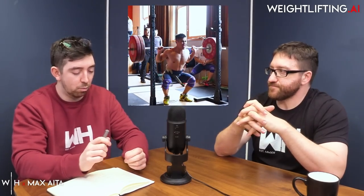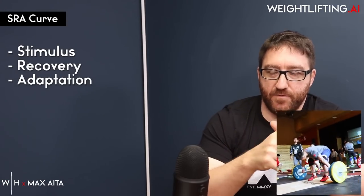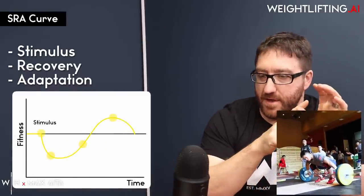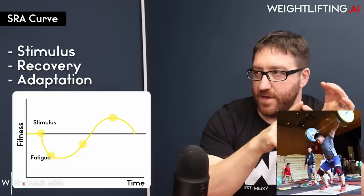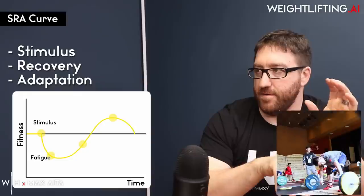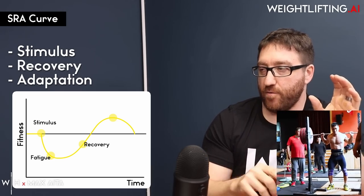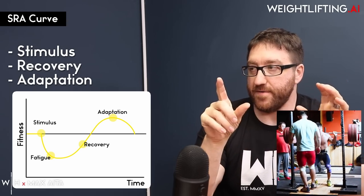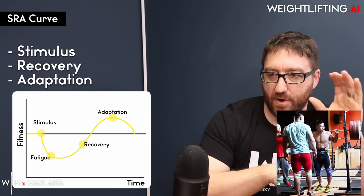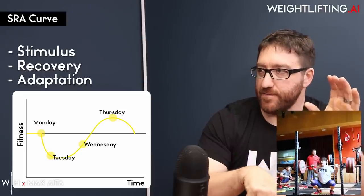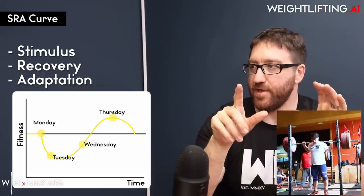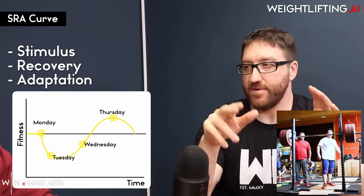The SRA curve stands for stimulus, recovery, adaptation. The stimulus happens, fatigue increases, you drop to a baseline, recovery brings you back to that baseline, and then adaptation takes you above it. A simple example: you squat 100 kilos for five on Monday, you're sore and tired Tuesday, by Wednesday or Thursday you're fully recovered, and now you can do 105 for five.